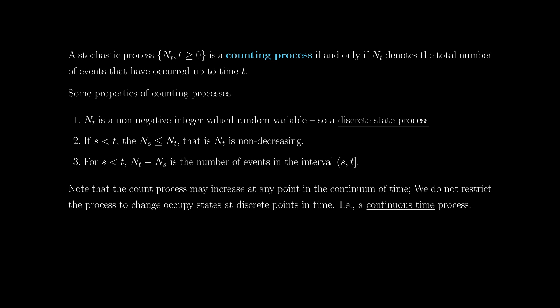For some time s less than time t, the count at time t minus the count at time s is the number of events that have occurred in the interval running from s to t. And that makes intuitive sense: if the count is 5 at time s and 10 at time t, the difference is the number of events that happened in that interval. Simple as that.